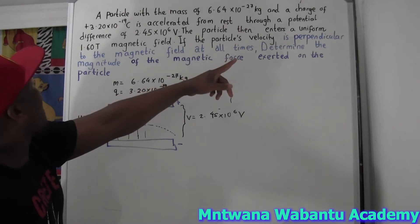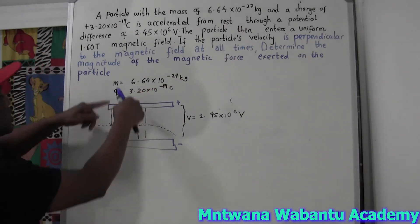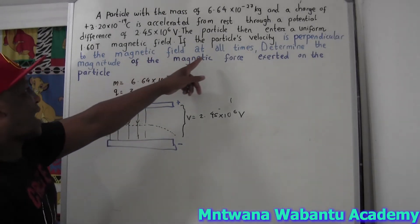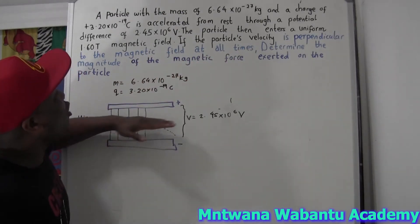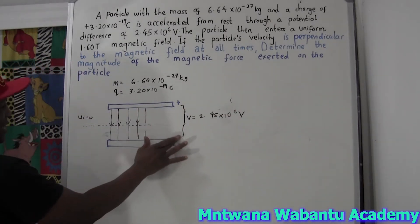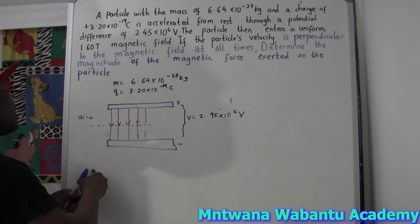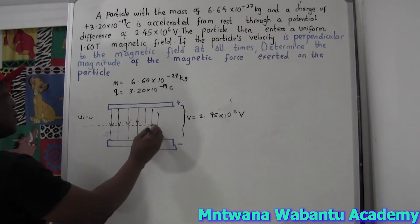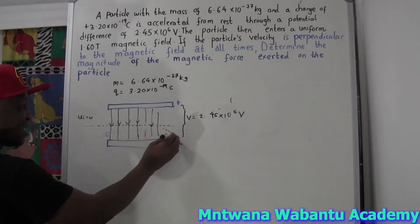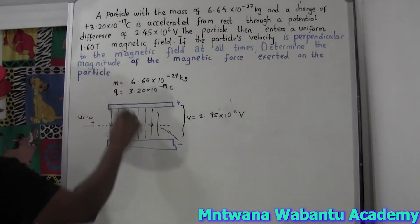If the particle velocity is perpendicular to the magnetic field — the way it moves is perpendicular to the magnetic flux, or magnetic field — perpendicular to the magnetic field at all times, meaning all the way. It's going to come in there and be attracted to the negative. But as I said, all the way it's going to be perpendicular.